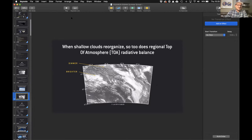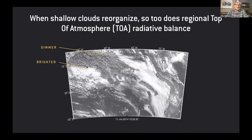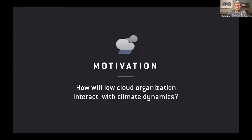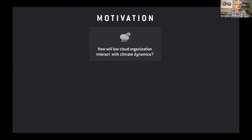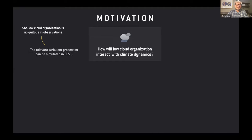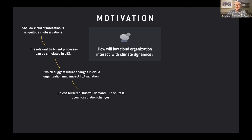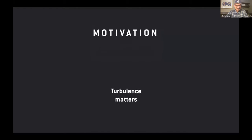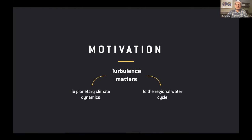These cloud reorganizations are associated with the brightness at top of atmosphere, and therefore all fluid flows driven by radiative imbalances atop of atmosphere should care about cloud reorganization dynamics. We know that these shallow clouds are ubiquitous in observations, we know the relevant turbulent processes required to simulate them, and these are beginning to suggest that future changes in cloud organization might have important climate effects. Turbulence matters — not just to planetary climate sensitivity, but also to the regional water cycle.